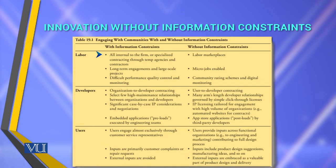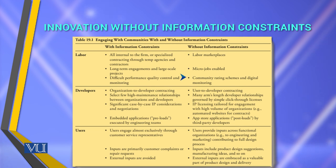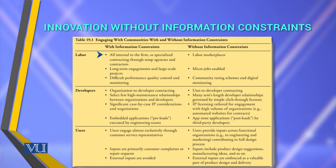When innovation is without information constraints, it goes to the labor market — labor market placement problems, micro-job enablers, community rating schemes, or digital monitoring problems. With information constraints, it is all internal to the firm or through specialized contracting via temp agencies and contractors, with long-term engagements on large-scale projects and difficult performance quality and control monitoring.